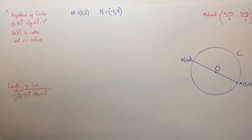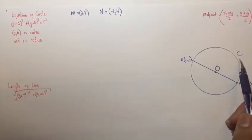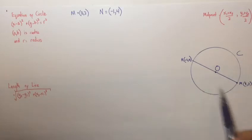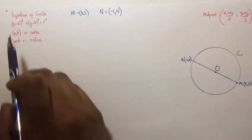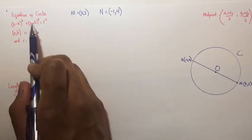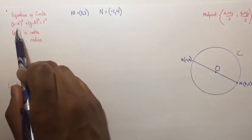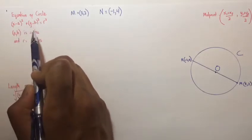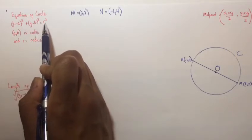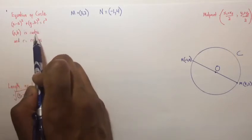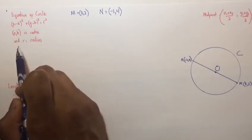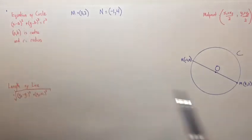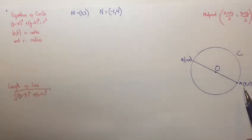In this question, we are asked to find the equation of the circle C, where M and N are the endpoints of its diameter. We know that the equation of a circle is given by (x - a)² + (y - b)² = r², where (a, b) is the center of the circle and r is its radius.